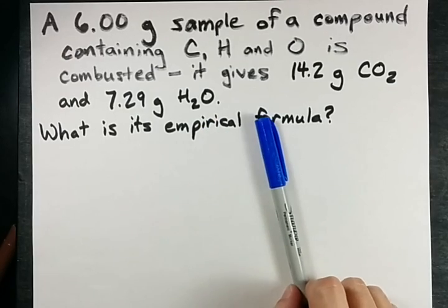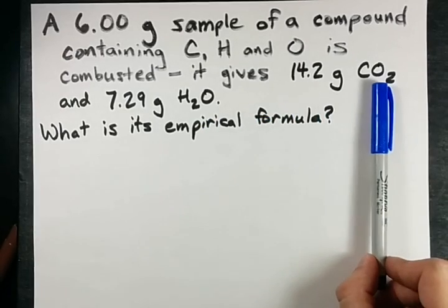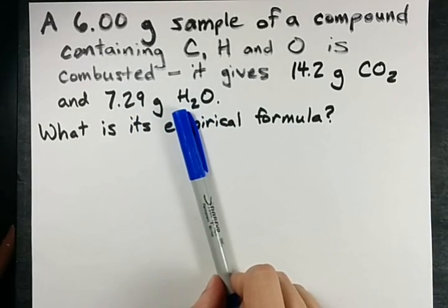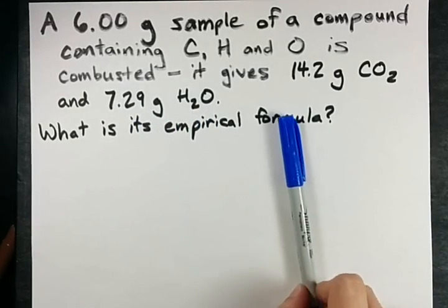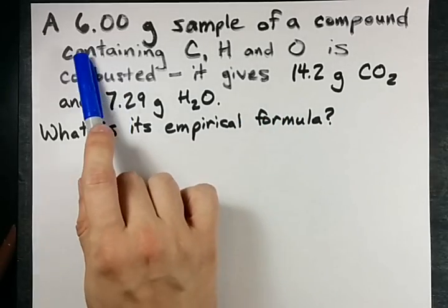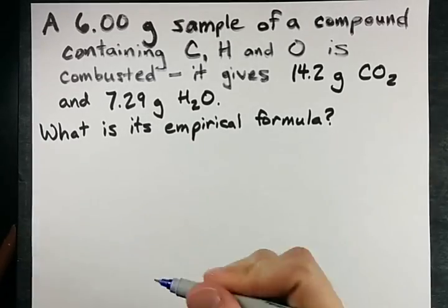Now if you know anything about combustion analysis, you know that this number will give the number of moles of carbon and this will give the number of moles of hydrogen. What we don't know is the number of moles of oxygen, but we can find that too because we were given the original mass. Let's do this together.